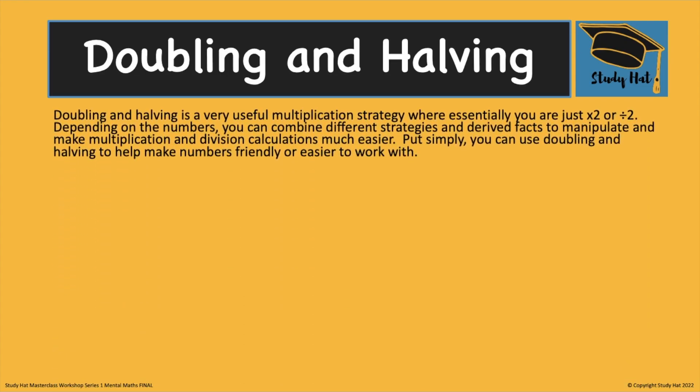You need to understand the core basics of doubling and halving which essentially for multiplication and division is simply multiplying by two and dividing by two. Depending on the numbers you can combine the strategies slightly differently with partitioning or tripling and thirding for example using facts that you derive from those manipulations to answer those calculations easier.